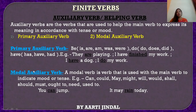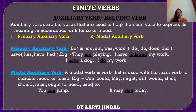Ab jaante hain ki modal auxiliary verbs kya hoti hain. A modal verb is a verb that is used with the main verb to indicate mood and tense. Modal verbs wo hoti hain jo kisi bhi sentence ke andar tense ya mood batane ke liye main verb ke saath use ki jati hain. Examples of modal auxiliary verbs: can, could, may, might, will, would, shall, should, must, ought to, need, used to. 'You can jump' — tum kood sakte ho. Isme 'jump' main verb hai aur 'can' modal auxiliary verb hai. 'It may rain today' — aaj baarish ho sakti hai. Isme 'rain' main verb hai aur 'may' modal auxiliary verb hai jo main verb ko support kar rahi hai.